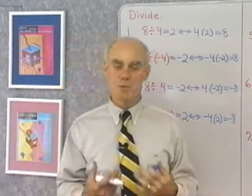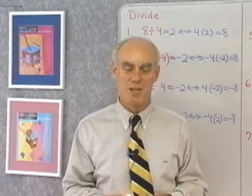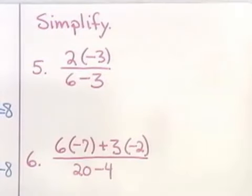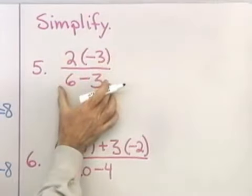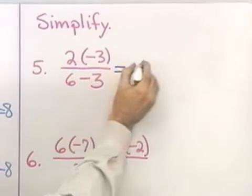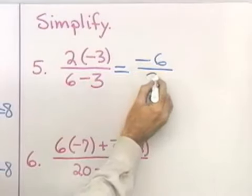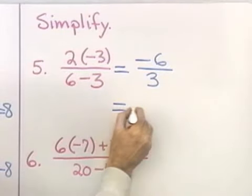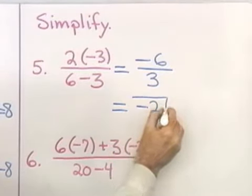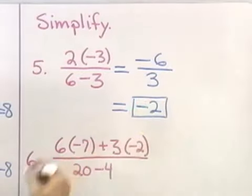What's really important is that you operate according to that rule — that it becomes second nature when you're doing division. Now let's look at some harder problems. For 2 times negative 3 divided by 6 minus 3, the fraction bar separates numerator from denominator. On top: 2 times negative 3 is negative 6. On the bottom: 6 subtract 3 is 3. Now I do my division: negative 6 divided by 3 is negative 2, because 6 divided by 3 is 2 and the numbers have different signs.